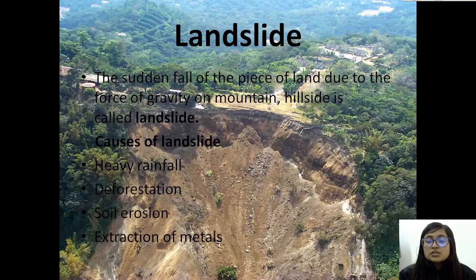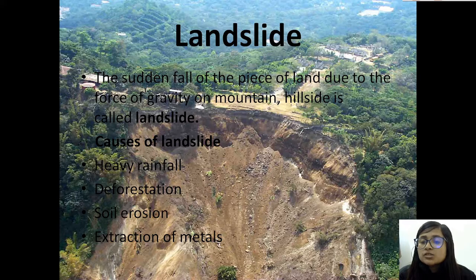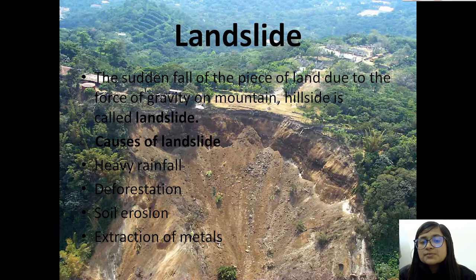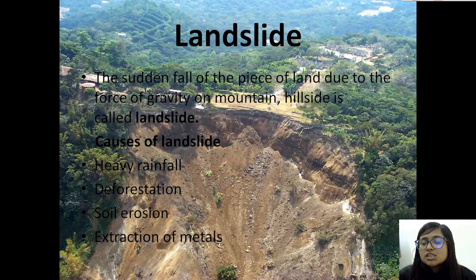Another type of natural disaster is landslide. The sudden fall of a piece of land due to the force of gravity on a mountain hillside is called landslide. The causes of landsliding are heavy rainfall, deforestation, soil erosion, and extraction of matter.